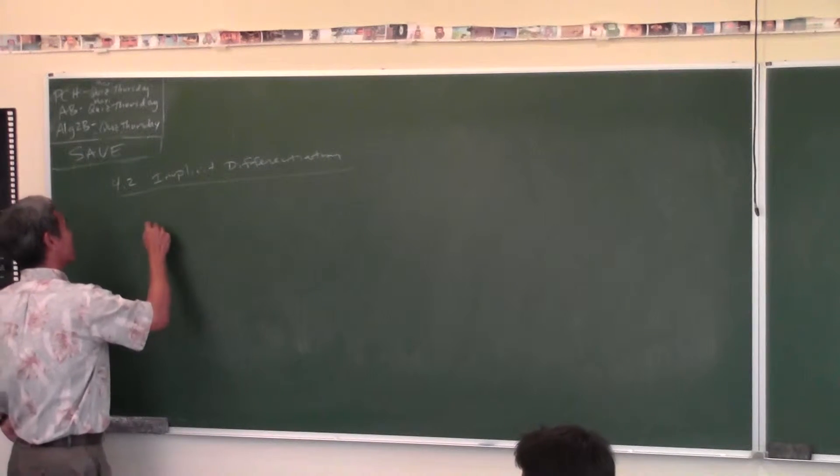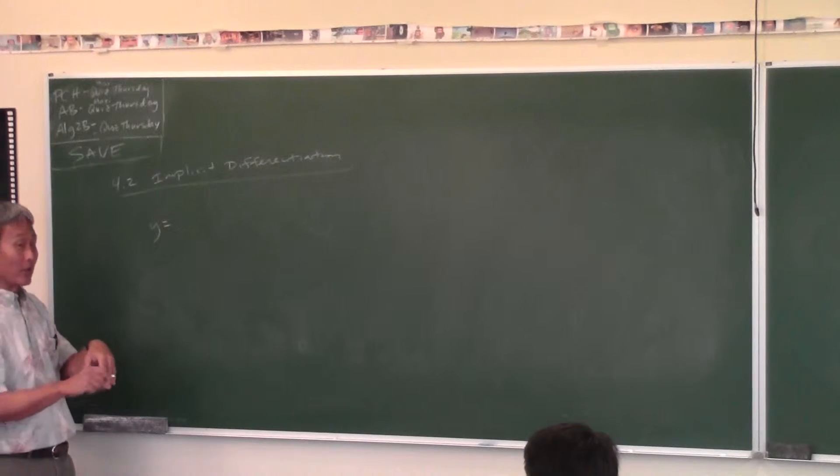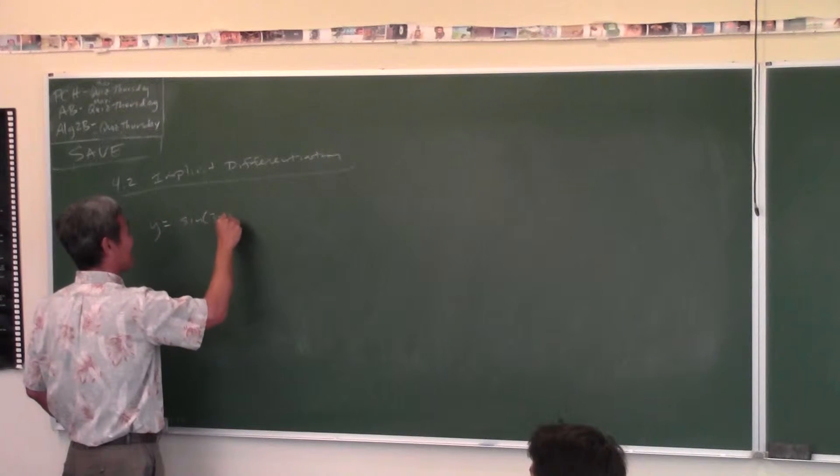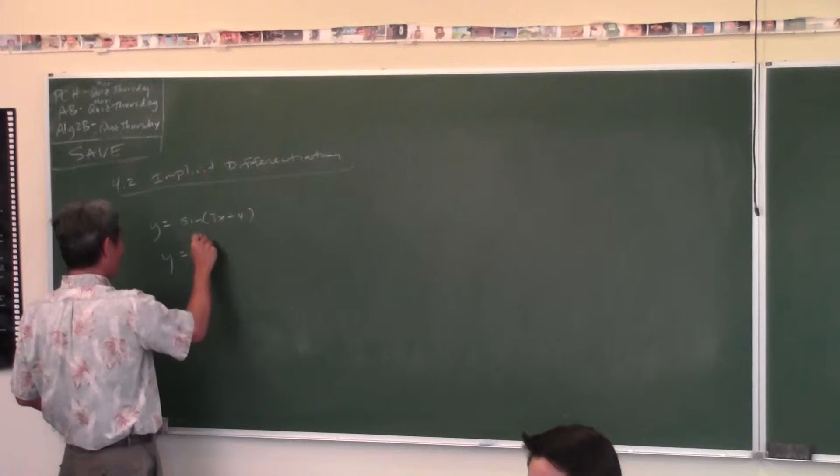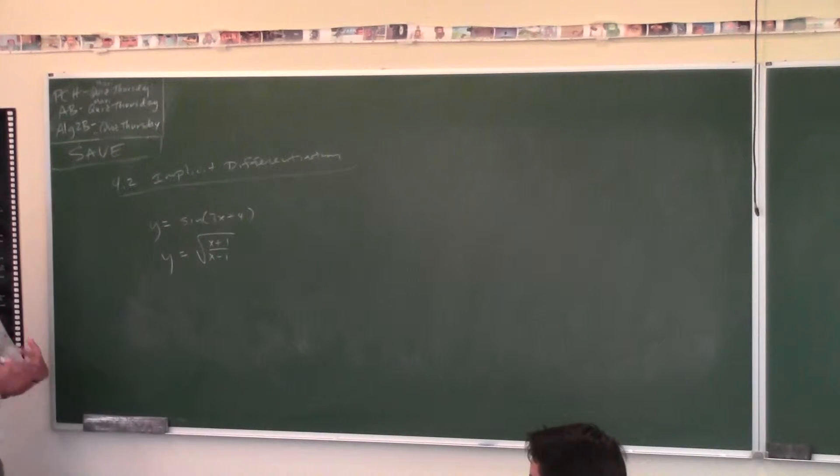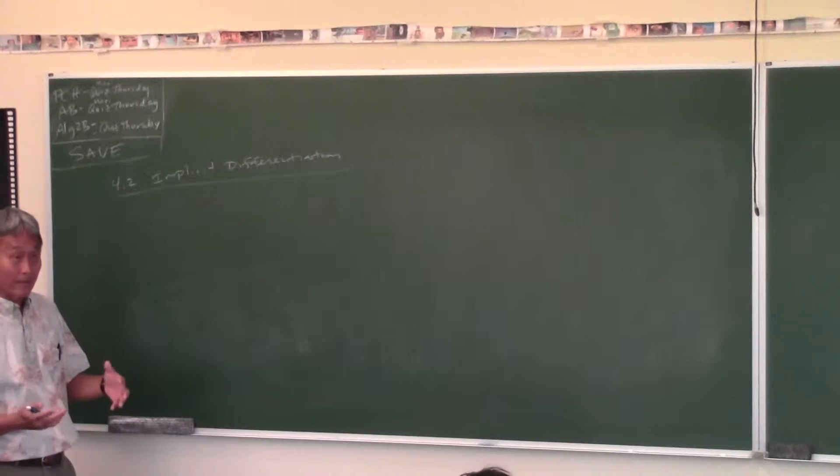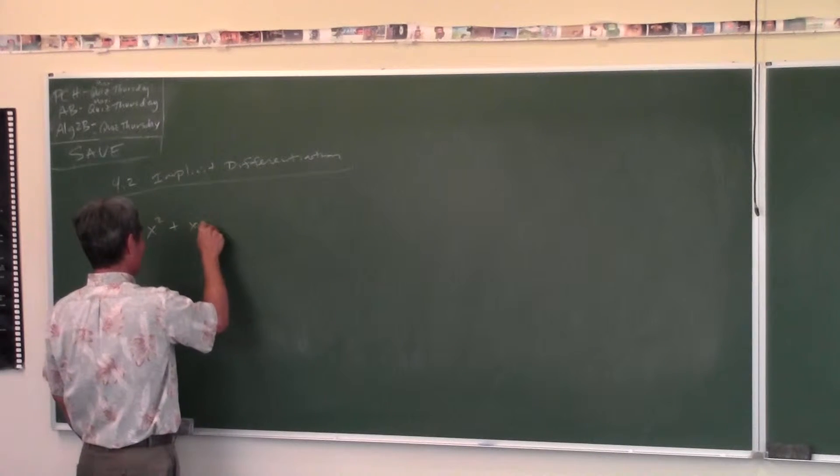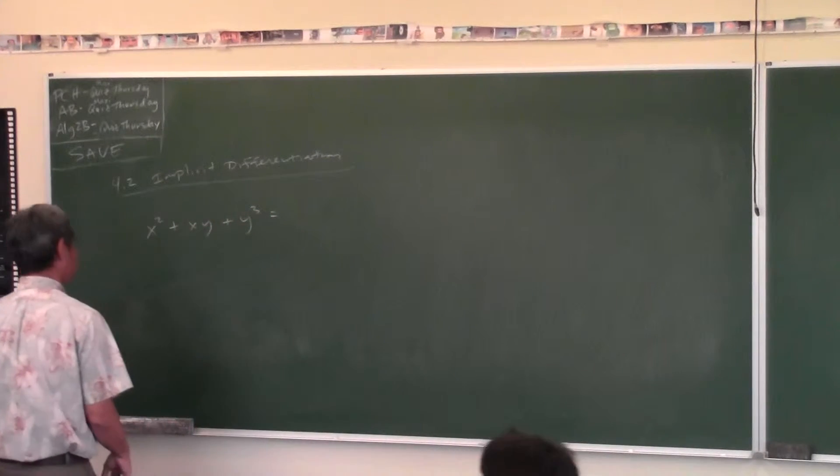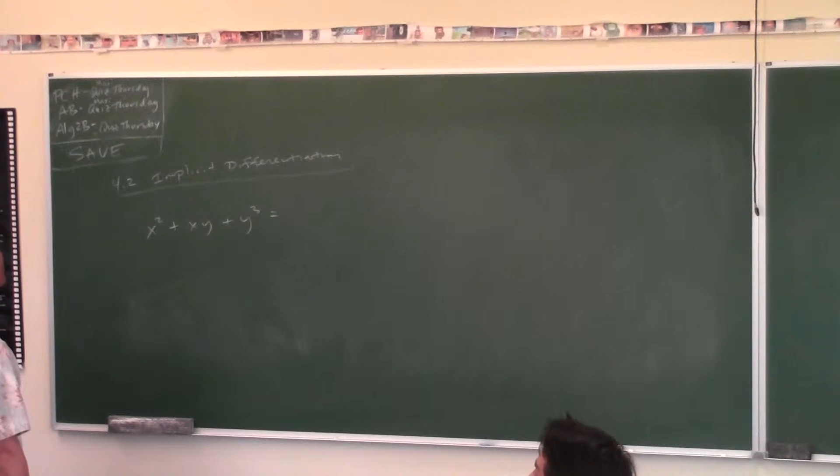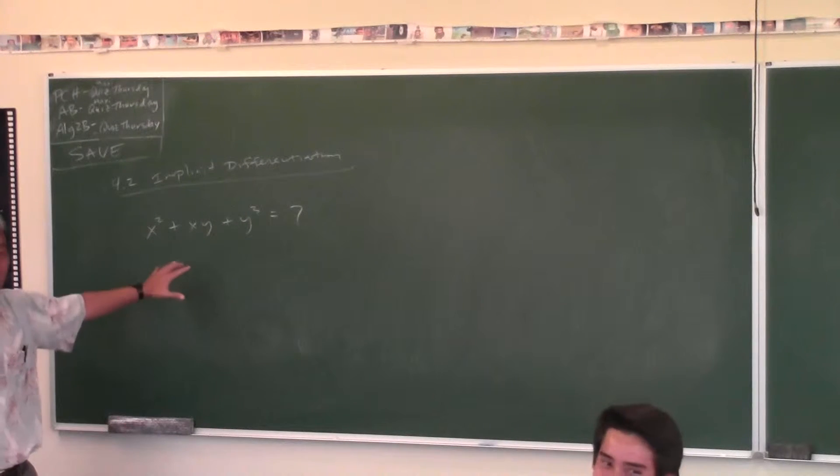Okay, now normally when we take derivatives, y is already solved for explicitly in terms of x, like this: y equals sine of 3x plus 4, right? Or y equals square root of x plus 1 over x minus 1. See, y is solved for explicitly in terms of x. Okay, but what happens if you come across something where it's either difficult or impossible to solve for y? Like something like this: x squared plus xy plus y cubed is equal to, give me a number. 2. Wrong! Okay. 4 plus 2 plus what? 7. How would you solve for y?